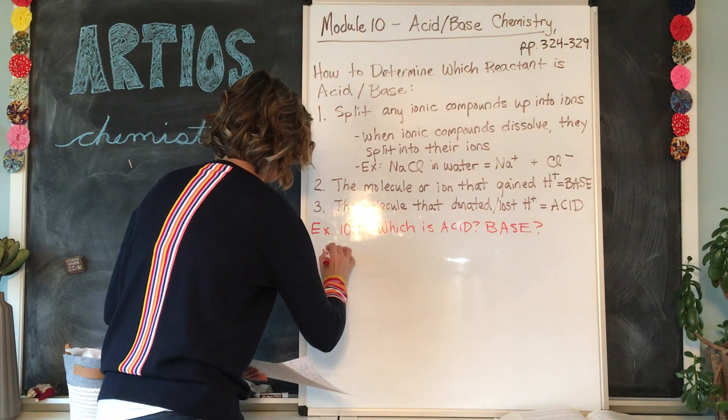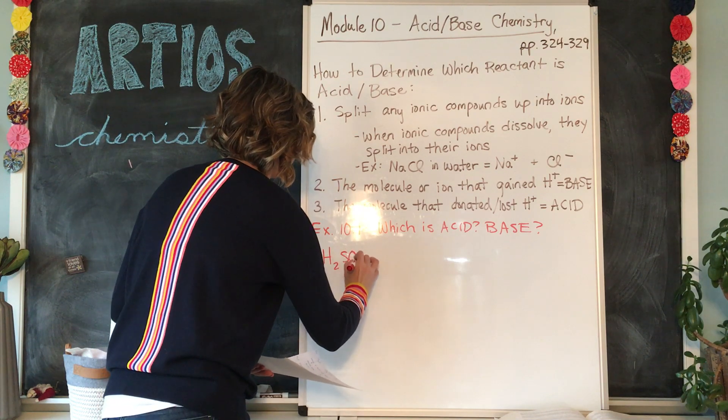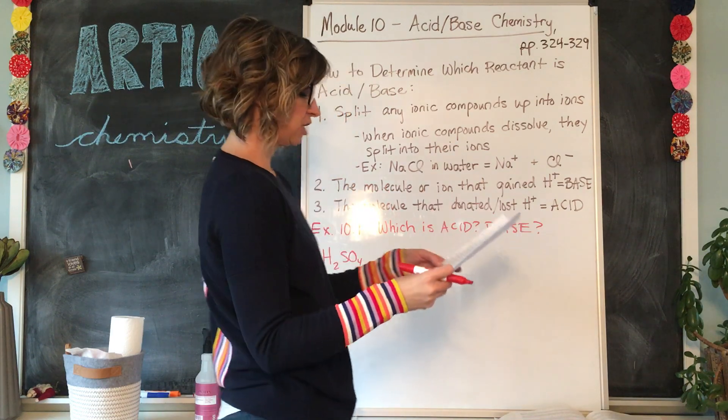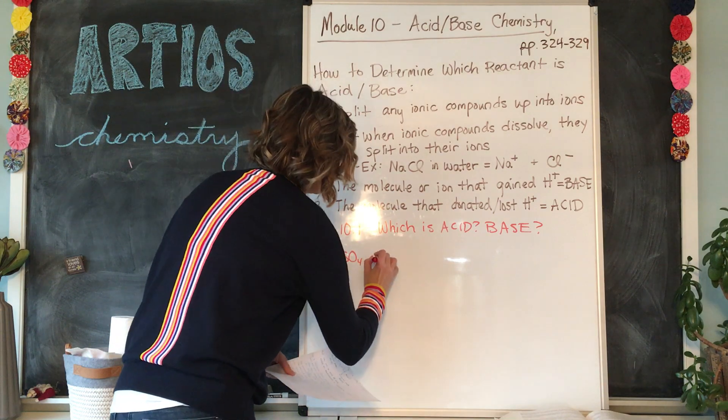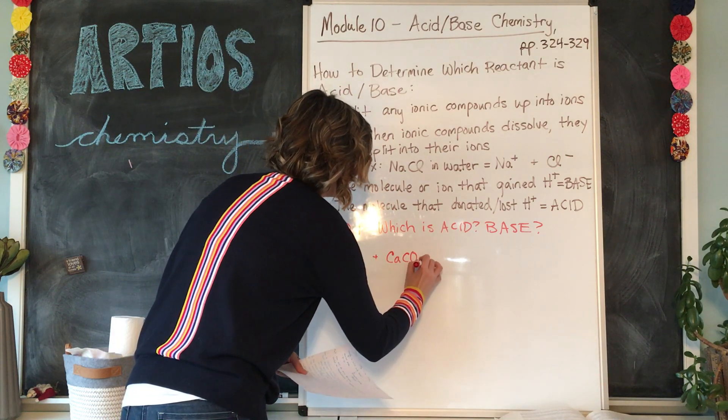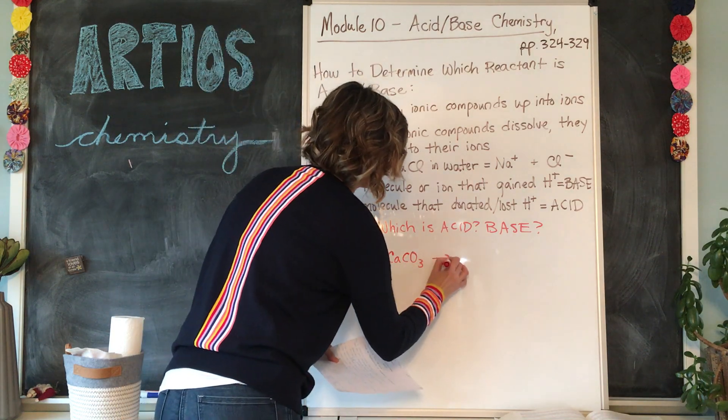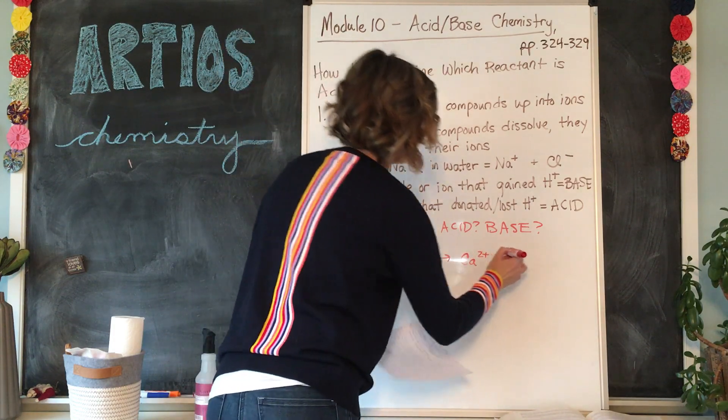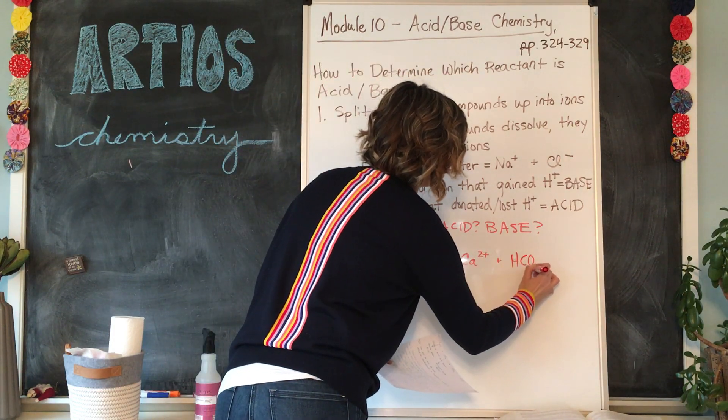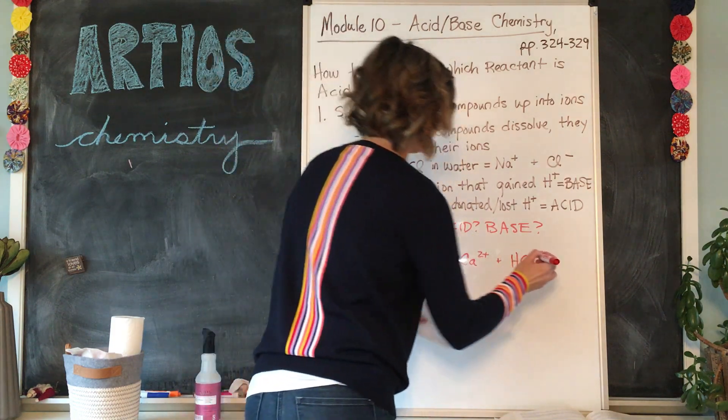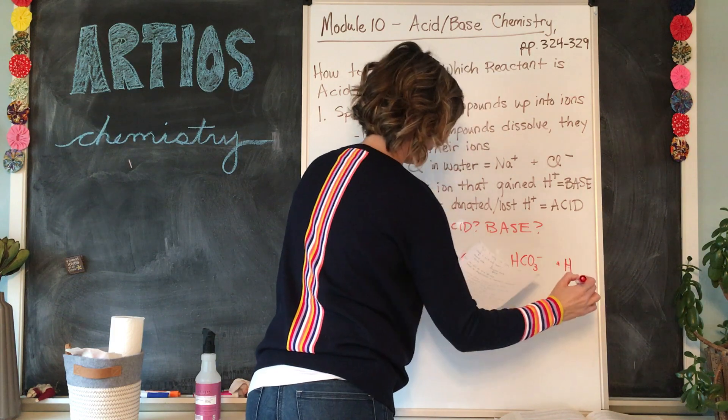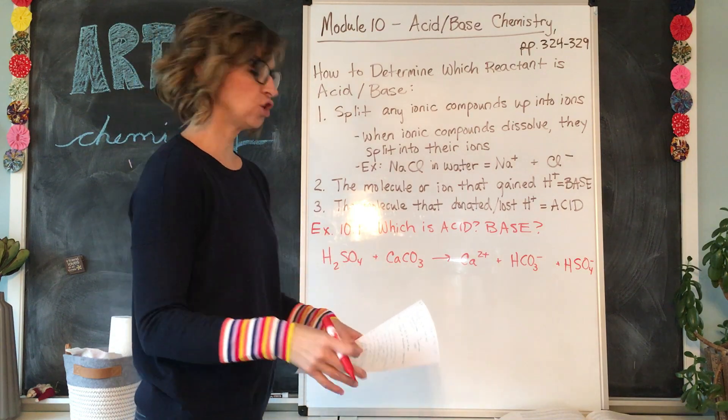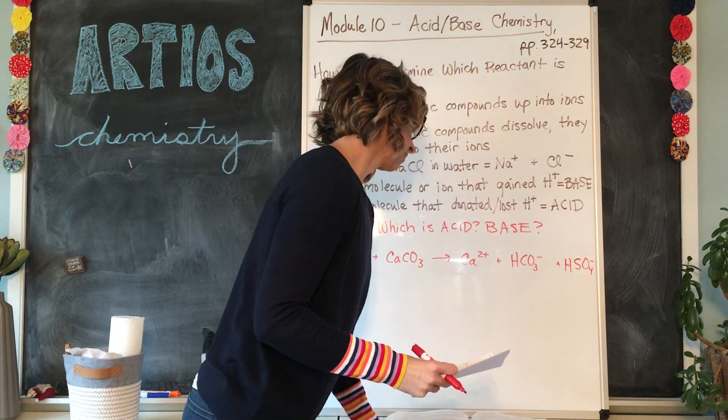H2SO4, and these are all aqueous, the little aq in the parentheses, they're all dissolved in water, so I'm just going to leave the aq off. H2SO4 plus CaCO3 yields Ca2+ plus HCO3- plus HSO4-. That's written out in your book on page 325.